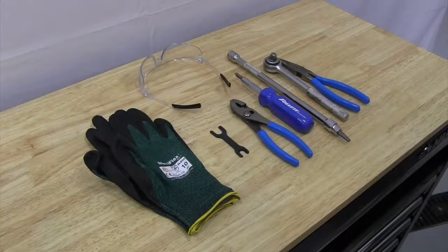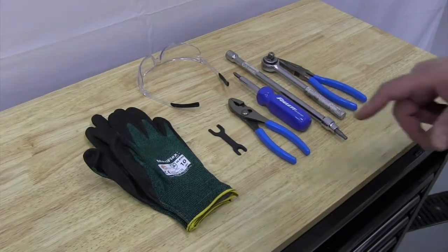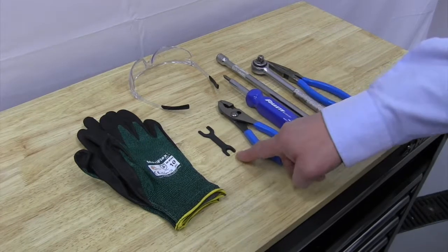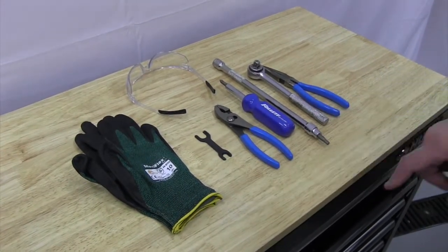Hi, this is Craig with Follett, and today we're going to be working on changing out the fail-safe solenoid for a 7-15 series ice water dispenser. The tools we'll be using for this is going to be a set of gloves, safety goggles, a John Guest wrench, and pliers.